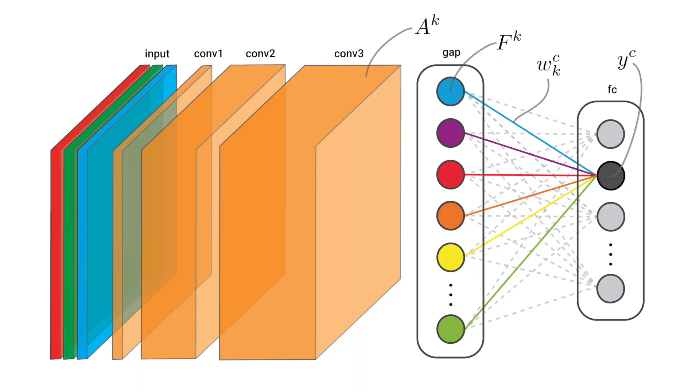The original CAM, which we will discuss in a future video, was used to explain networks with a global average pooling layer. It uses the weights that connect the GAP values and the logits for the class in the output layer. Another adaptation, AblationCam, takes a permutation approach to calculating the weights by deactivating entire feature maps and calculating the impact on the output logits.